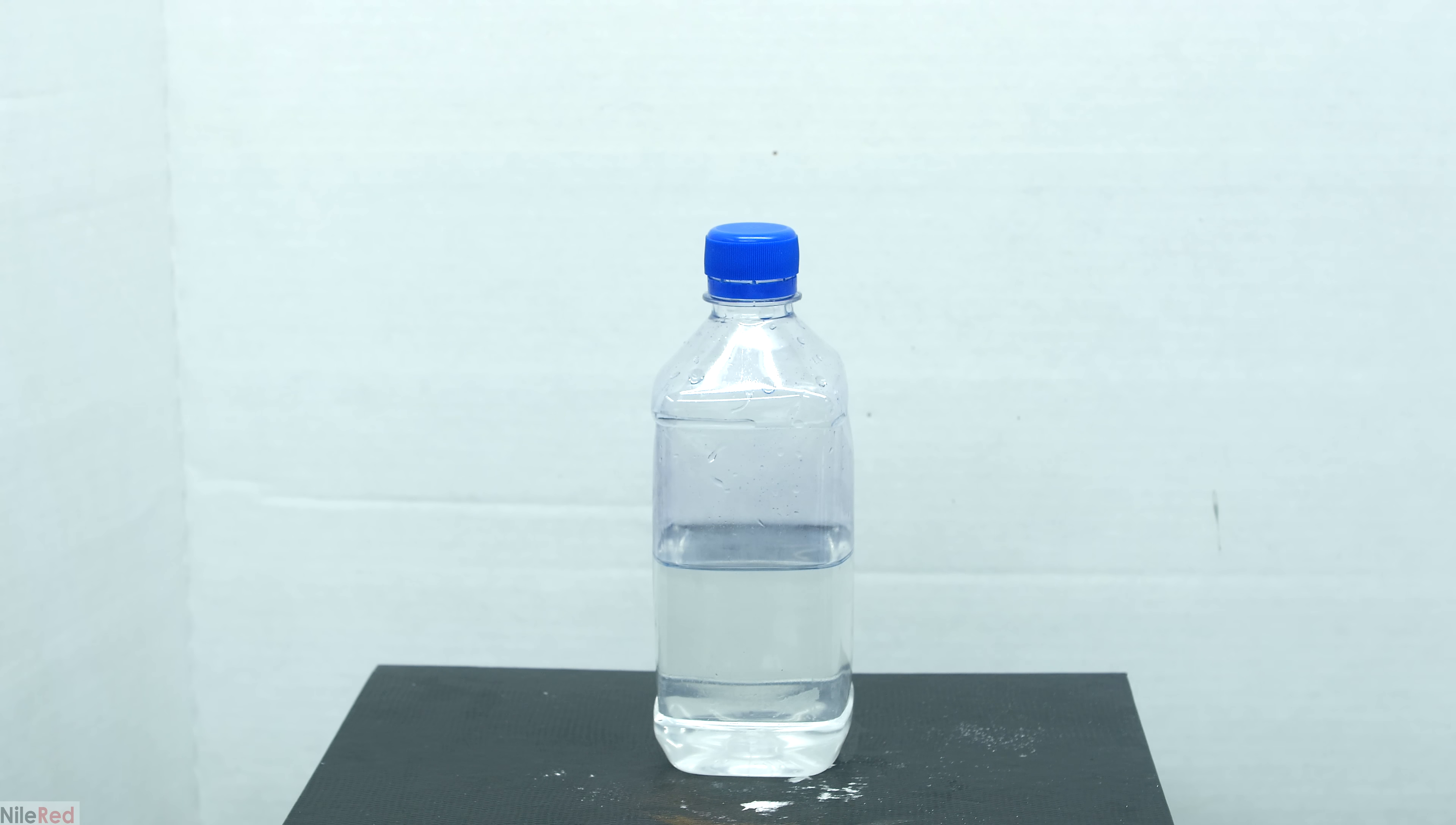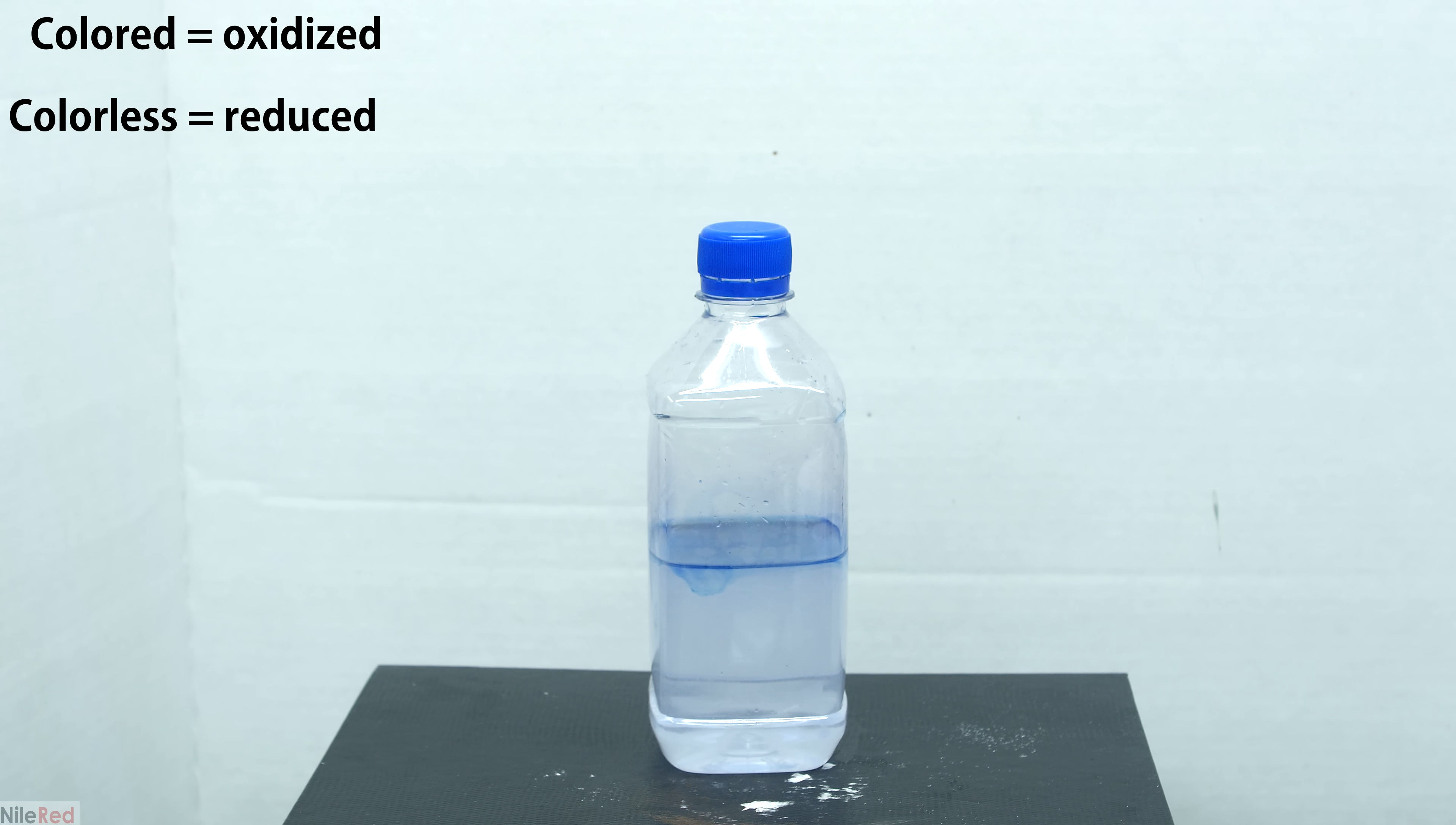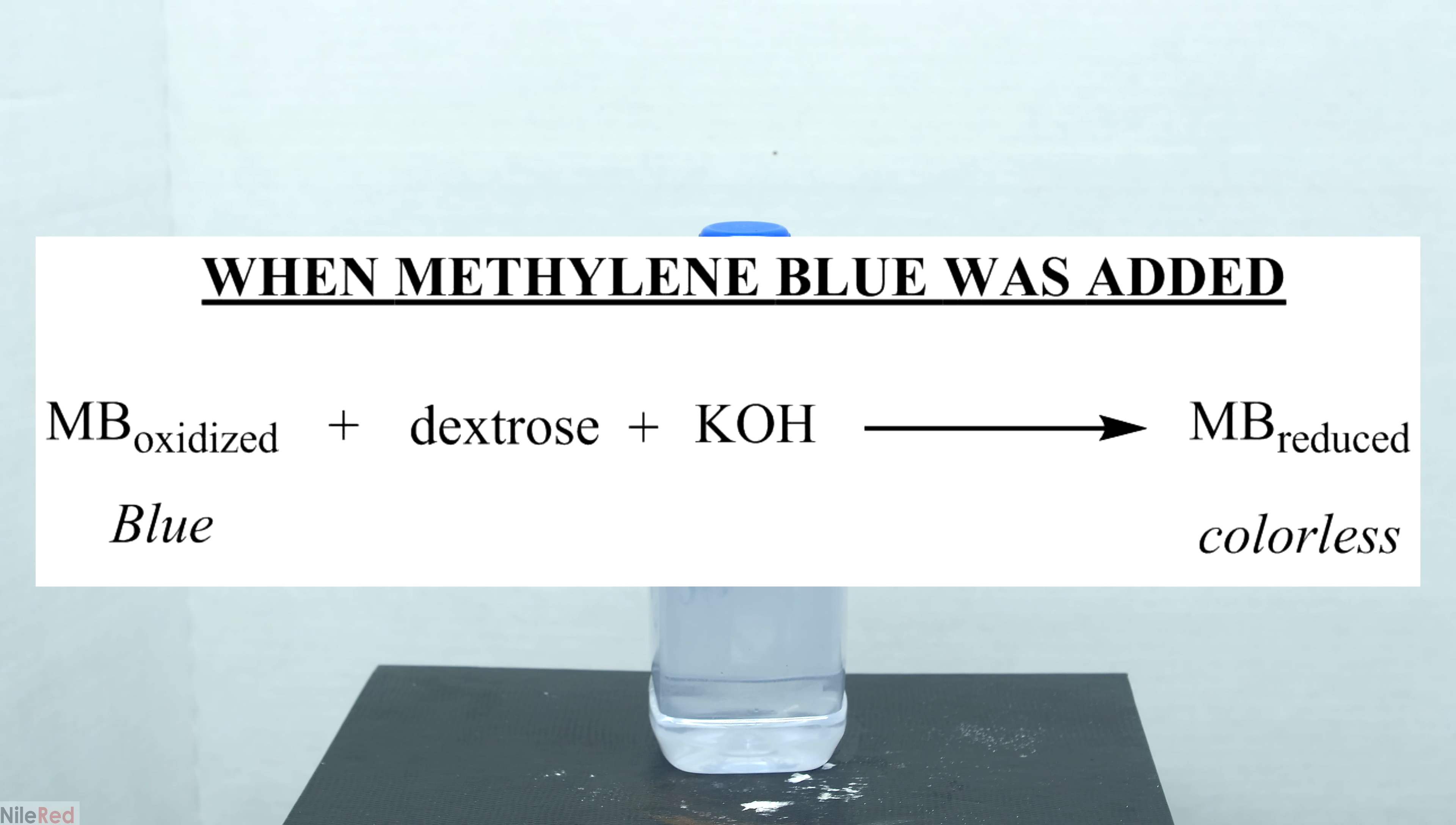The methylene blue indicator that we're using actually has two different forms where one is colored and one is colorless. The colored form of the methylene blue is its oxidized form and its reduced form is colorless. During the preparation of this demonstration we had colored methylene blue which means that it was oxidized but when we added it to the dextrose potassium hydroxide mixture it was reduced to its colorless form.